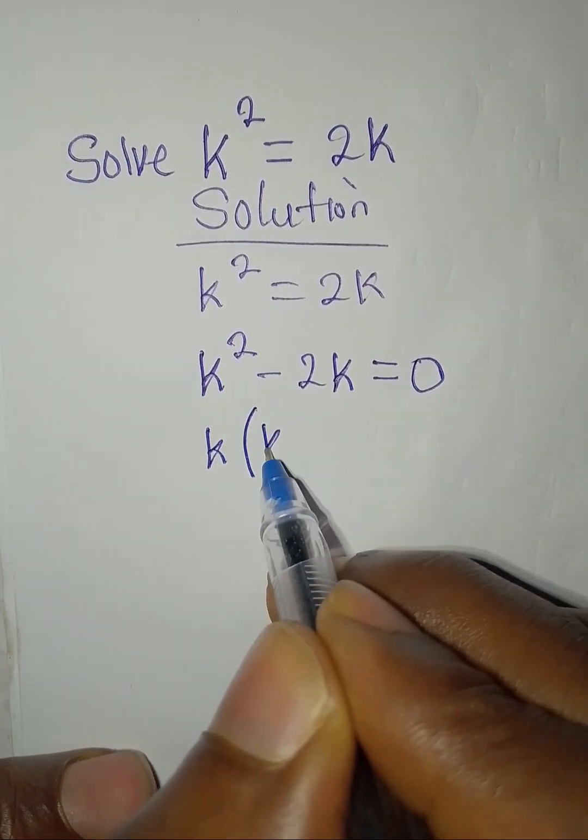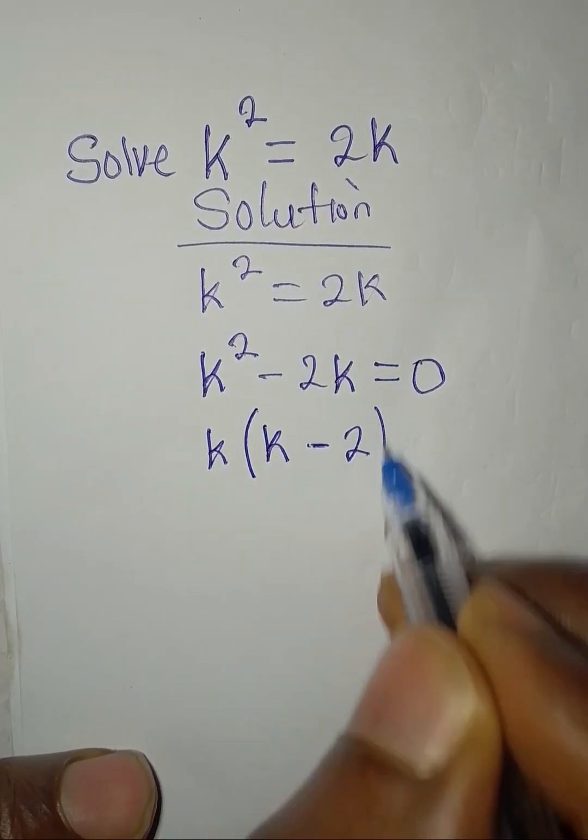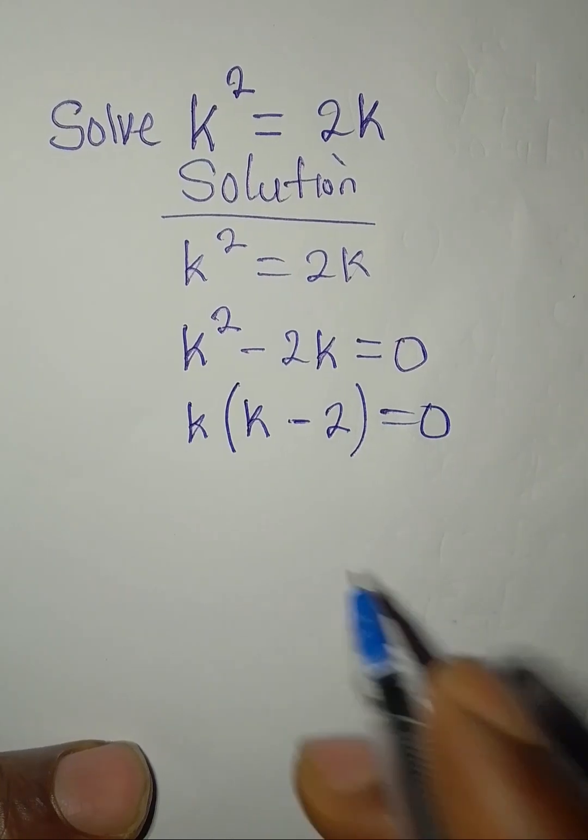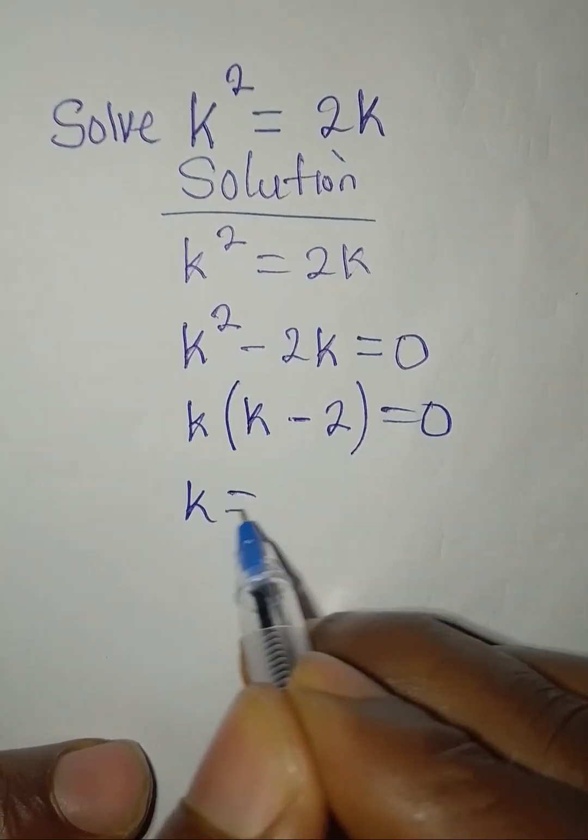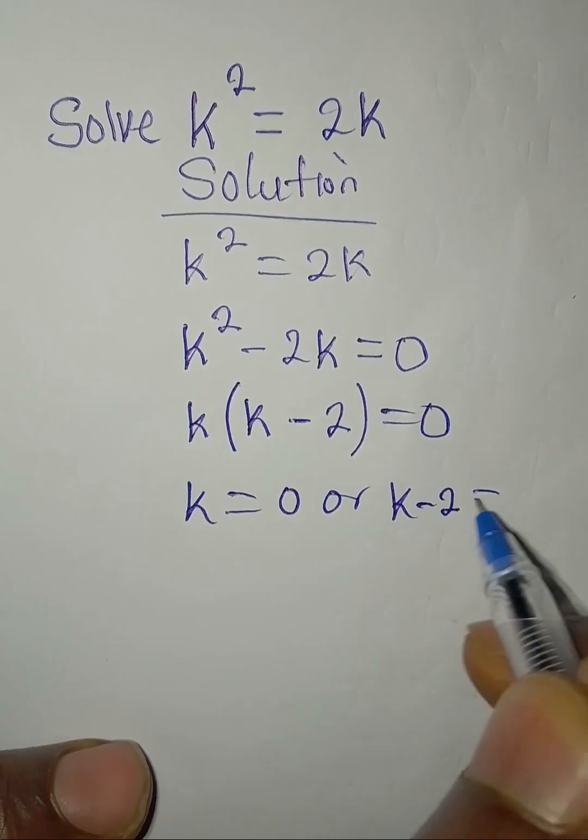Here we are going to have k, and here we have k minus 2. Then we equate to zero. From here now, k = 0 or k - 2 = 0.